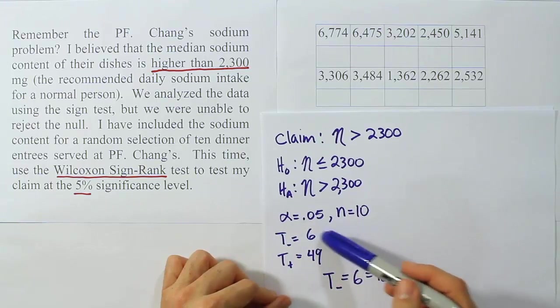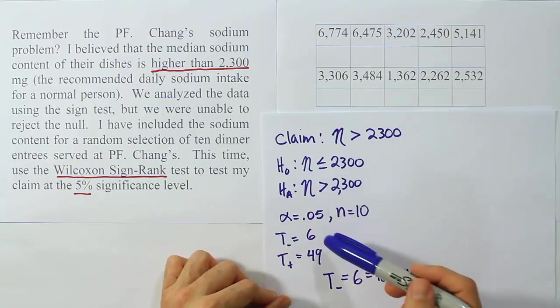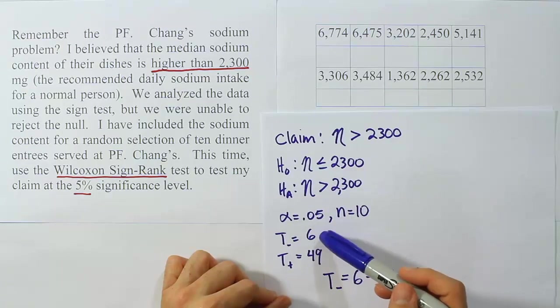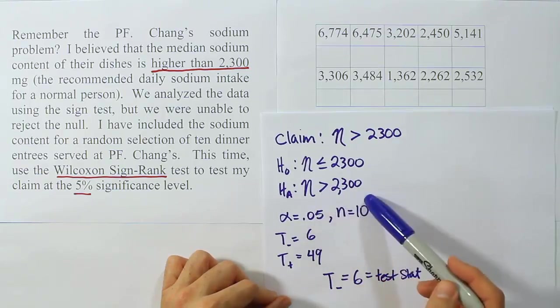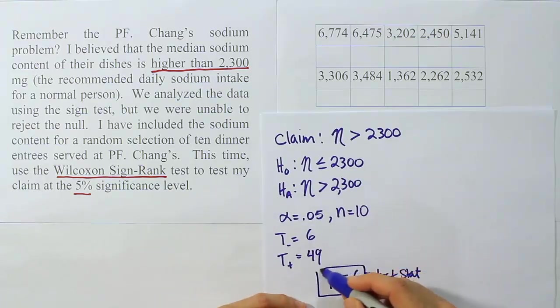Theoretically, we should have more positive ranks than negative ranks if this is true. Because if this is true, if we're subtracting 2300 from bigger numbers, we'll get positive differences. So we'd expect that the smaller rank should be negative. It happens to pan out or work out the way we expected it according to H_A, but you can't just cheat and look at this to determine what your test stat is, because sometimes the data doesn't reflect the claim. Either way, that's your test stat. T negative is your test stat.